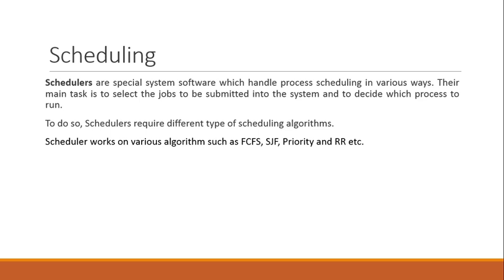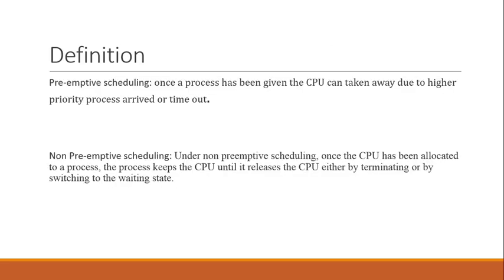After FCFS, we covered SJF, which has two types: preemptive and non-preemptive. SJF stands for Shortest Job First. Among the available processes, whichever has the lesser execution time is considered the shortest job. In the preemptive variant, whenever a higher-priority process arrives, we pause the current execution and allow the new process to run. In the non-preemptive variant, the current process runs to completion before switching.